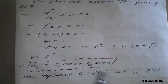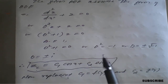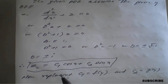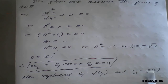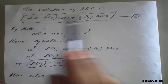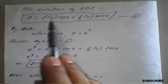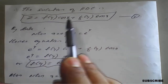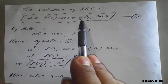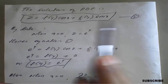We replace the constants c₁ with f(y) and c₂ with g(y). Since there is no particular integral, z_c is the complete general solution. Therefore the complete solution is z = f(y)cos(x) + g(y)sin(x). Call this equation number one.